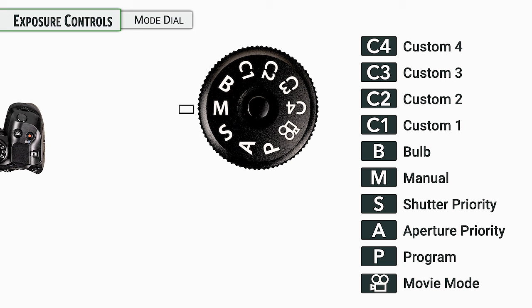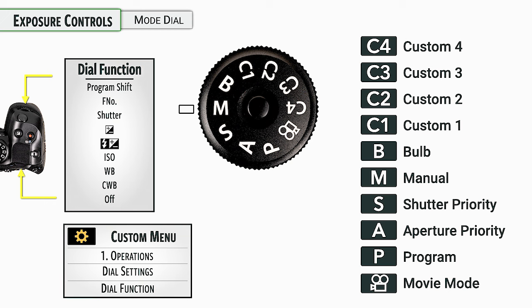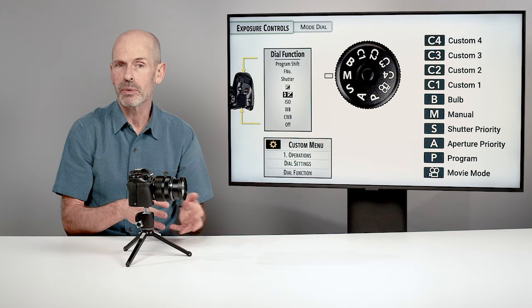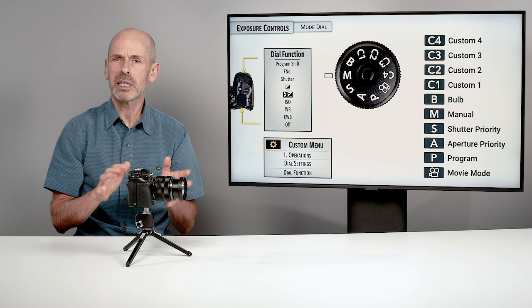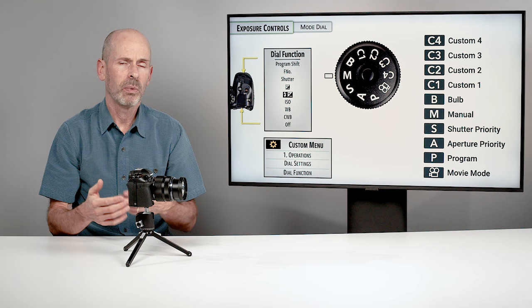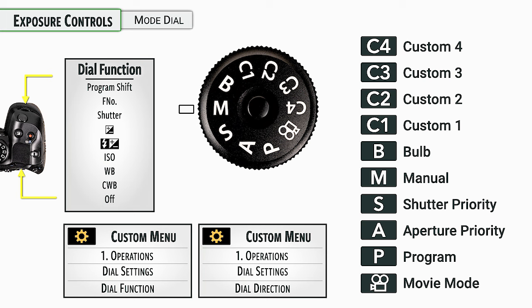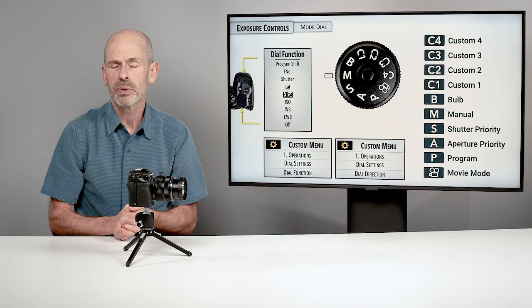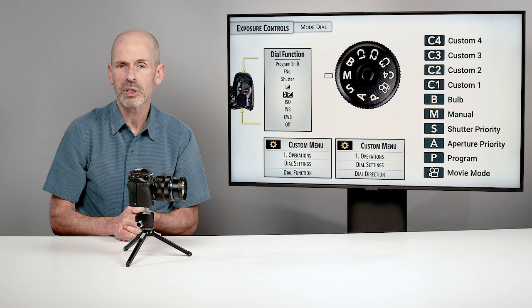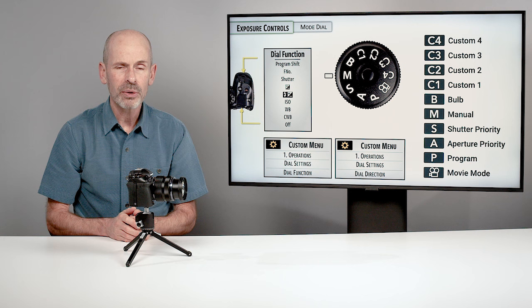Those are your exposure modes. When we get into customizing the camera's dial functions, note that which dial does what can all be adjusted. The front or rear dial assignments for aperture, shutter speed, and exposure compensation can be changed. I changed my camera when out shooting because of how I gripped it and which setting I changed most often. I also talked about dial direction, which can also be reversed. We'll be doing a lot of this customization in the custom menu, so keep notes of anything that bothers you — you can probably fix it.